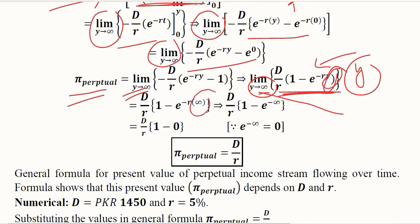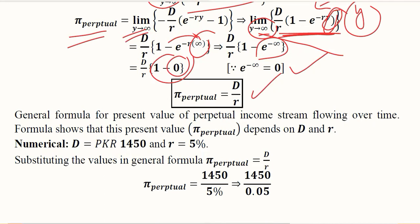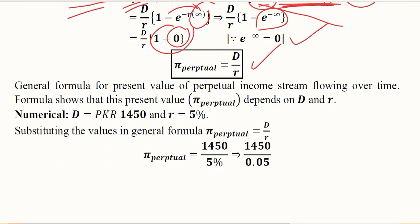So instead of y now we are introducing infinity, and when we do so the exponent of minus infinity will be 0, then 1 minus 0 will become 1, and finally we will have D over r as the present value of the perpetual flow. So we have developed this formula and now we can use a numerical example to verify our results and interpret it.